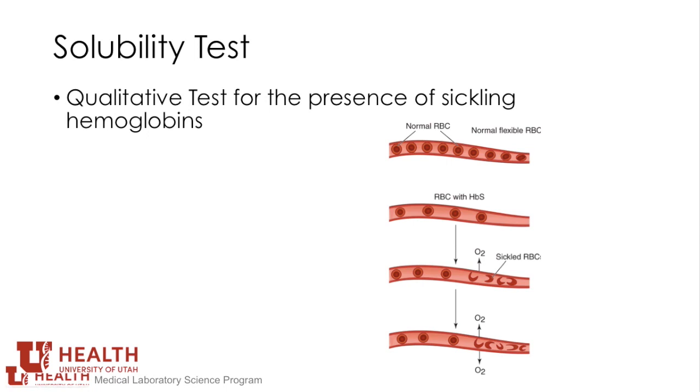Sodium hydrosulfite then reduces the released hemoglobin. Reduced hemoglobin S is insoluble in the concentrated phosphate buffer and forms a cloudy turbid suspension. Other sickling hemoglobin subtypes may also give a positive result, while normal hemoglobin will become clear.